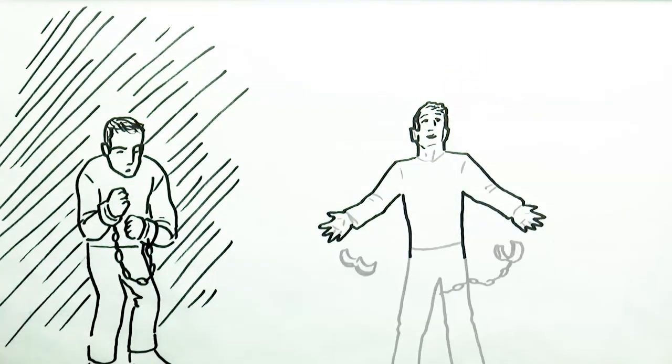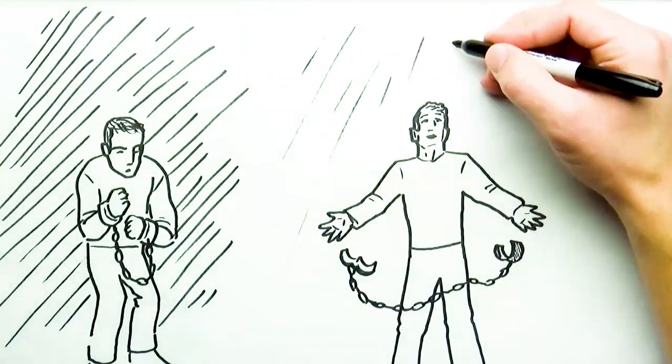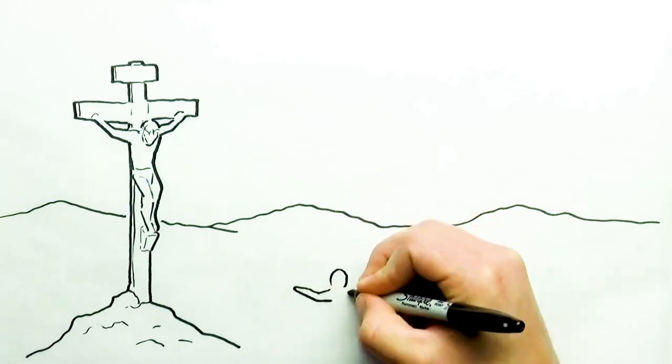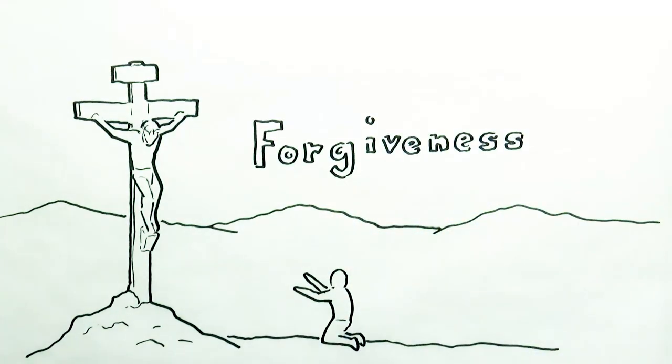The answer to overcoming sin of any kind is found in the person of Jesus Christ. The Bible declares that without the shedding of blood there is no remission or forgiveness for sins. And because Jesus shed his perfect blood for us while dying on the cross, he made eternal forgiveness available to us.